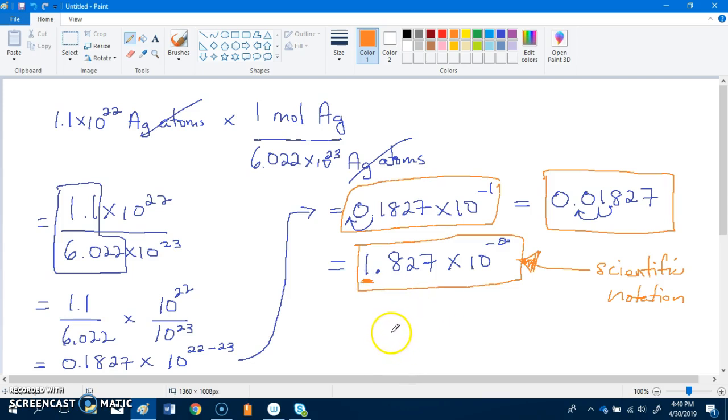The challenge here is being able to convert from this to this to this and back and forth, really understanding what this negative one power is in scientific notation. I hope that clarifies for you the answer. Thank you for your question, bye for now.